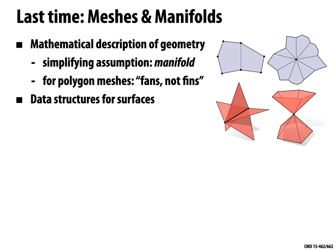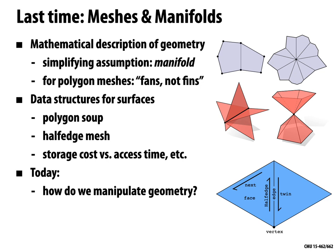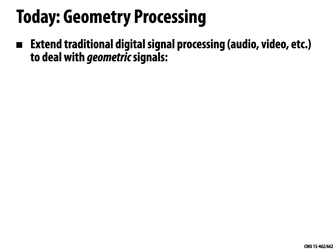We looked at data structures for polygonal surfaces, starting with basic stuff like polygonal soup and building up to half-edge meshes, which give us more sophisticated access to mesh connectivity. We talked about trade-offs between storage costs and access time. Today, now that we have these data structures, we want to understand how we can manipulate and process geometry.